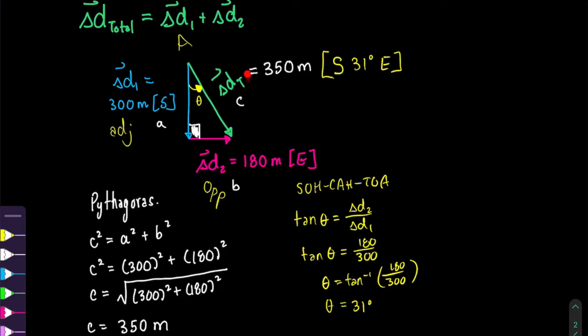So we need to find the magnitude from Pythagoras and the direction from SOHCAHTOA. This was straightforward because our vectors formed a right-angled triangle. When they don't, you may have to use the sine law and the cosine law — not so fun, but still doable.